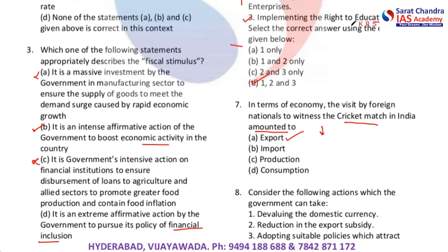Because net foreign remittances are coming inside, it is a kind of scenario where foreign remittances are coming in and services are being consumed from India — so it is export of services. It is not import, it is not production since the cricket match involves both national teams, and it is not purely consumption per se because you are paying to avail a service. The answer to the seventh question is A.